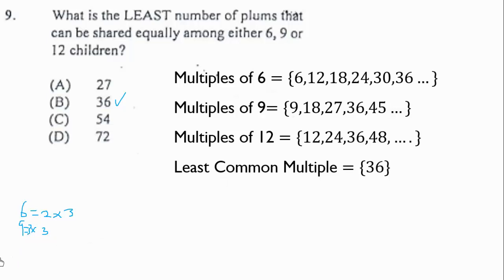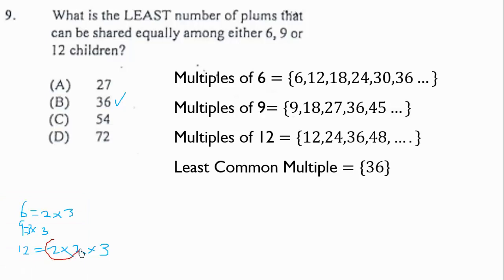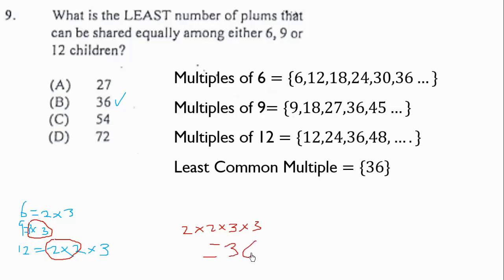Continuing the LCM via prime factorization: 12 = 2 squared times 3. For the LCM, we take the highest powers: the highest power of 2 is 2 squared (which is 4), and the highest power of 3 is 3 squared (which is 9). So the LCM is 4 times 9, which equals 36.